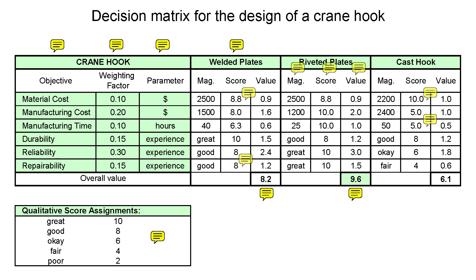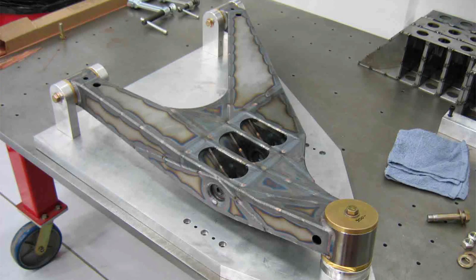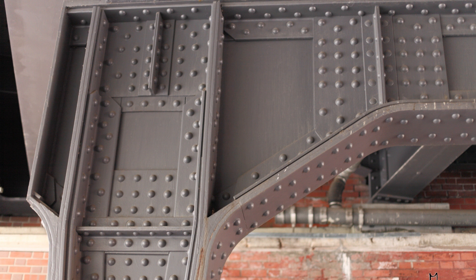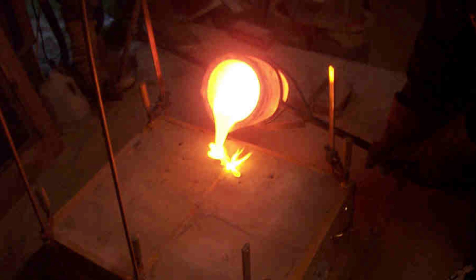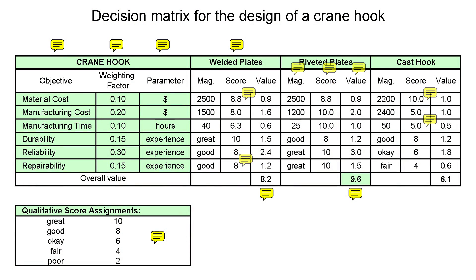For EML 2322, if an objective can be assessed quantitatively, you must always do so. The evaluation matrix contains one column for each design under consideration. Our crane hook example compares three methods of manufacturing a crane hook: the first method is to weld plates together, the second is to rivet plates together, and the third is to cast molten metal. Note each concept being compared has three subcolumns — magnitude, score, and value. Magnitude refers to the value of the objective being evaluated. In the case of our crane hook example, the magnitude of the material costs for the three designs are $2,500, $2,500, and $2,200 respectively.